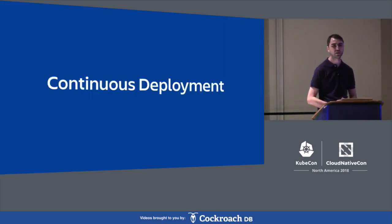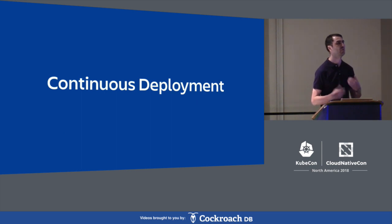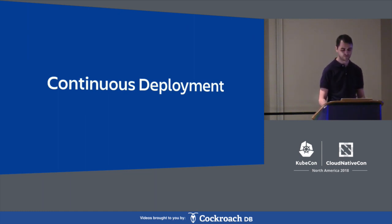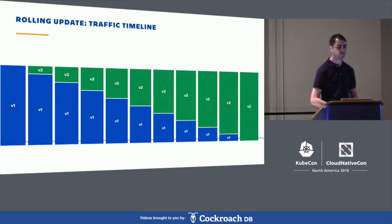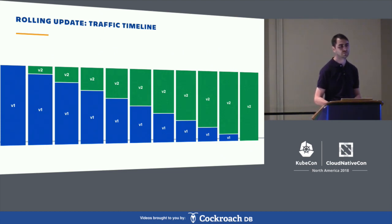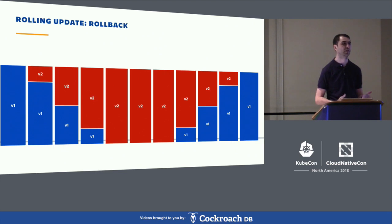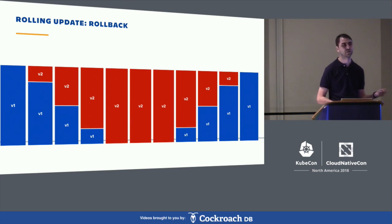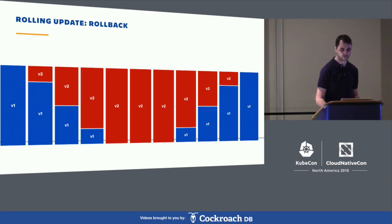With continuous deployment, we don't just focus on the happy path where our rolling update works as expected. The more important part is the automation of rollout and rollback. For rolling update, the traffic timeline replaces all pods of version one with pods of version two. In case of a bad release, as soon as we detect an issue, we roll back the deployment — we create new pods of the old version, which replace version two.